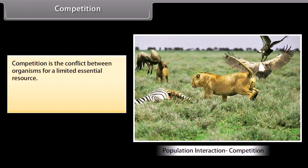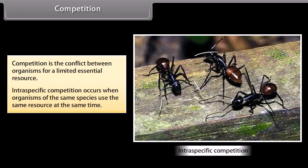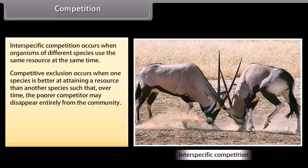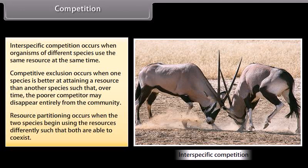Competition is the conflict between organisms for a limited essential resource. Intraspecific competition occurs when organisms of the same species use the same resource at the same time. Competitive exclusion occurs when one species is better at attaining a resource than another, such that the poorer competitor may disappear from the community. Resource partitioning occurs when two species begin using resources differently so that both are able to coexist.